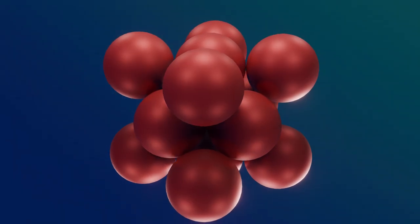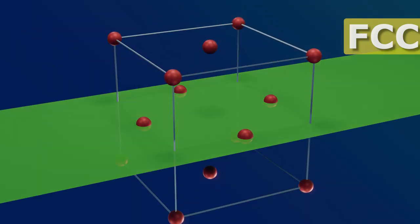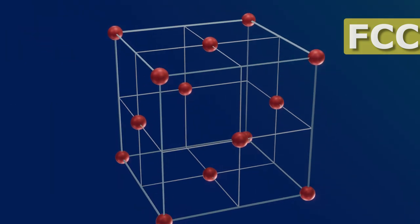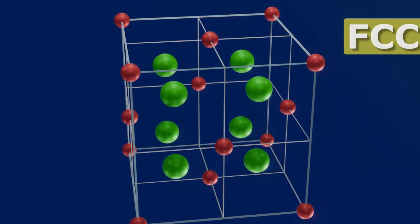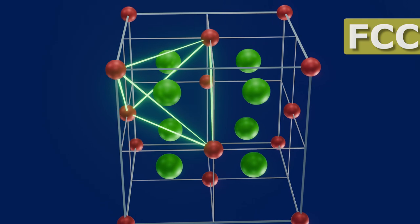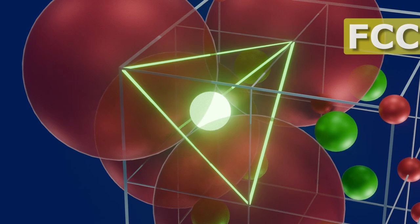In a face-centered cubic lattice, if we bisect its volume on all three axes to make eight equal segments, eight tetrahedral voids lie on the body center of each segment. Each tetrahedral void is formed by a corner atom and three adjacent face-centered atoms.